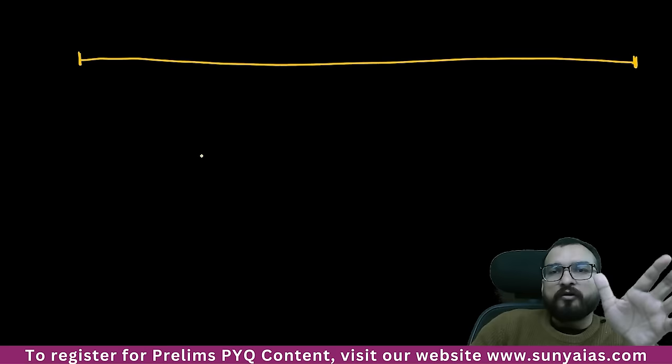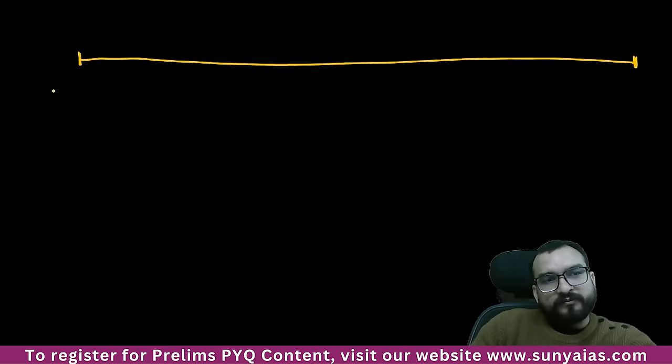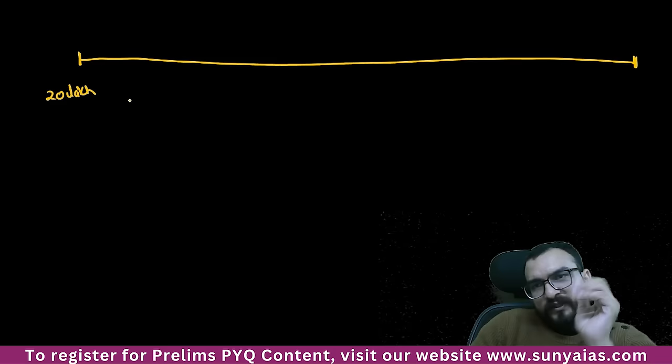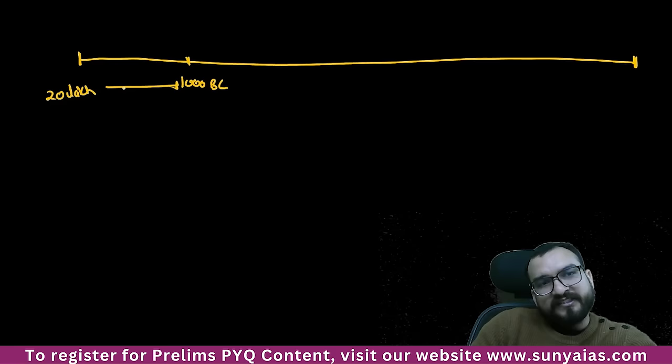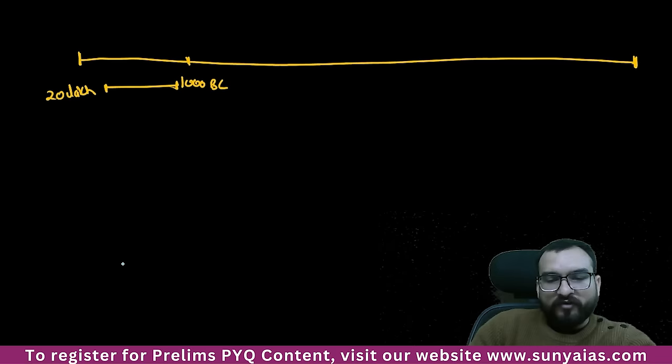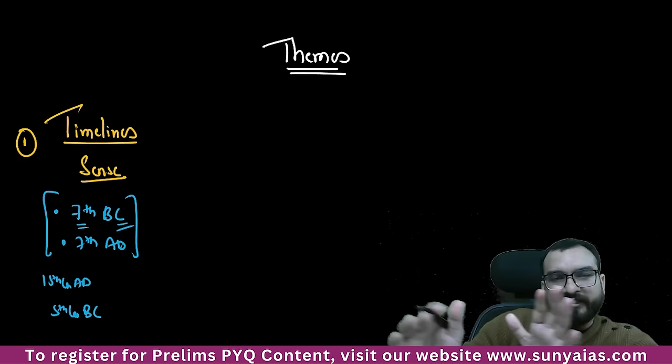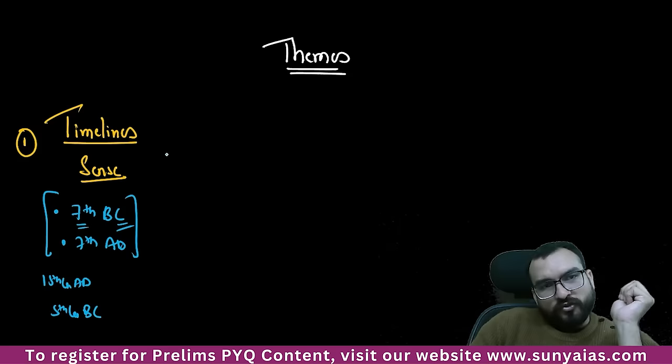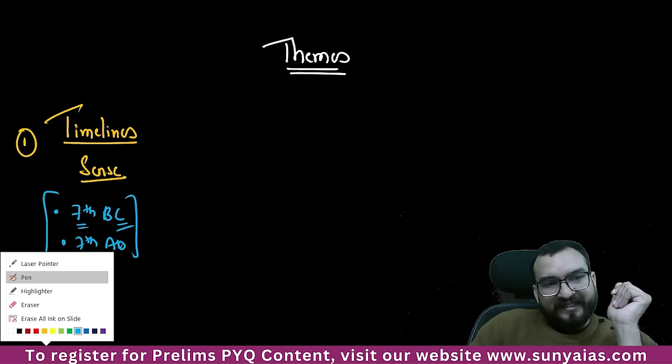If you have done my class, you can easily draw the timeline. Right now I'm just showing you how ancient history has progressed. Those who have been my students of PRP revision class, foundation, or crash course — we have divided the whole timeline: 20 lakh BCE to 1000 BCE is prehistoric times. Let me first give you the themes, then show you the timeline, then we will see the topic-wise discussion.